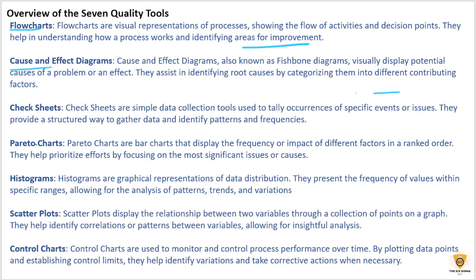The second one is the cause and effect diagram, also called the fishbone diagram or Ishikawa diagram. These visually display potential causes of a problem or an effect, and help in identifying root causes by categorizing them into different factors.